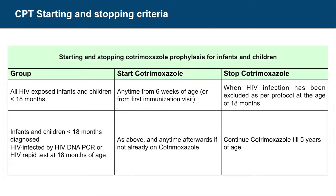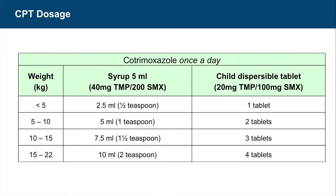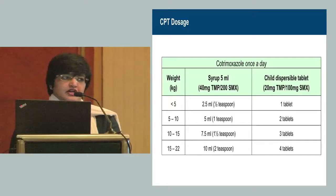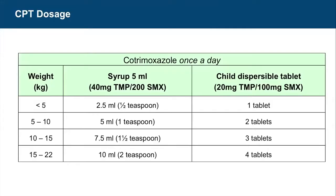Cotrimoxazole is initiated at six weeks and stopped at the age of 18 months when the antibody test is negative. If the antibody test at 18 months is positive, cotrimoxazole is continued until five years of age through the ART center. Cotrimoxazole is not procured by NACO — it is shared through the general health system. The dosage is: less than 5 kg — one dispersible tablet; 5 to 10 kg — two tablets; 10 to 15 kg — three tablets; more than 15 kg — four tablets. This increasing dose is why weight monitoring is very important at each visit. All visits are recorded in the EIC3 card.